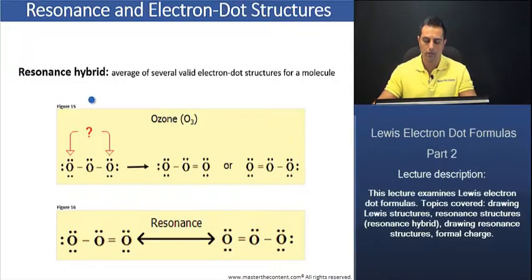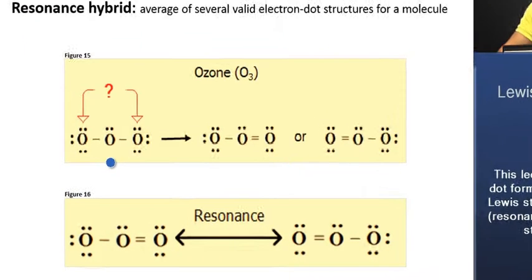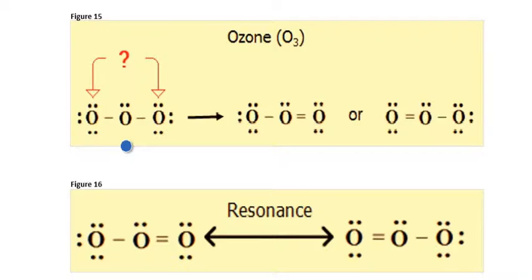And let's go ahead and read that definition. A resonance hybrid is the average of several valid electron dot structures for a molecule. Now, for example, if we come back to the oxygen molecule for a moment, there's actually experimental evidence that both of the oxygen-oxygen bonds that we see here, they actually have identical lengths.